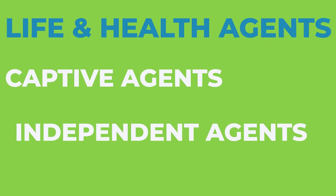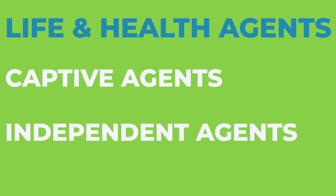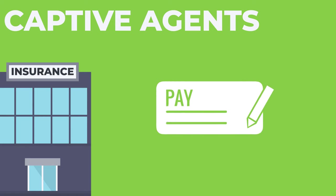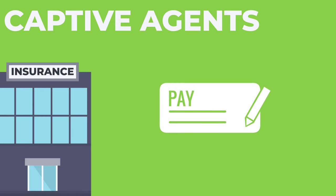There are two main types of life and health insurance agents: captive agents and independent agents. Captive agents work for an insurance company and only sell policies carried by that company. Captive agents often earn a salary as well as commission based on the number of policies they sell.